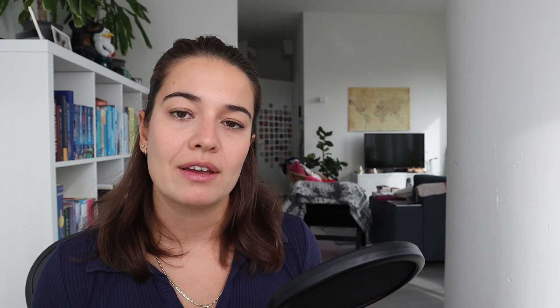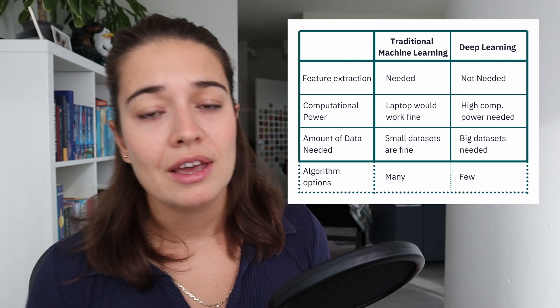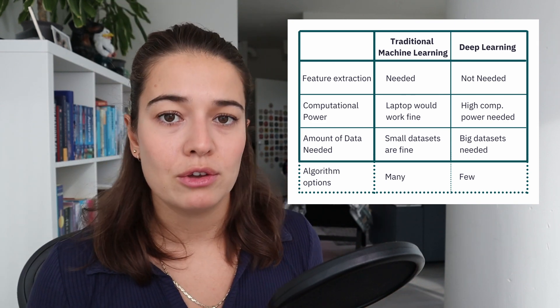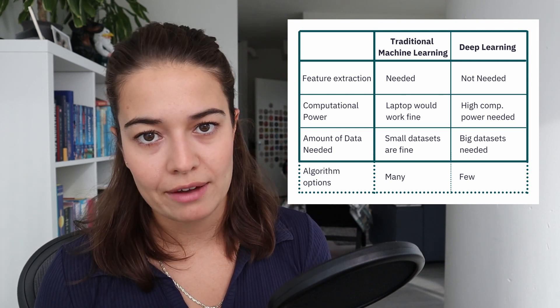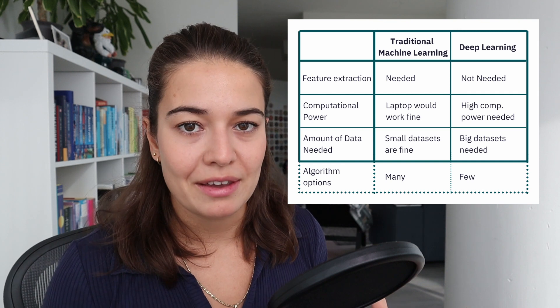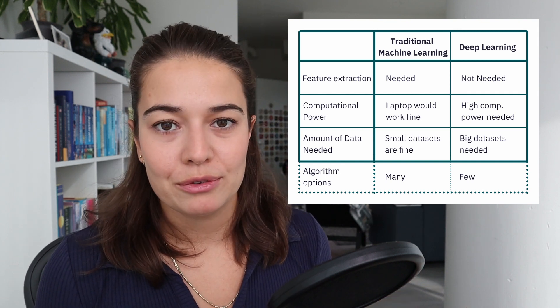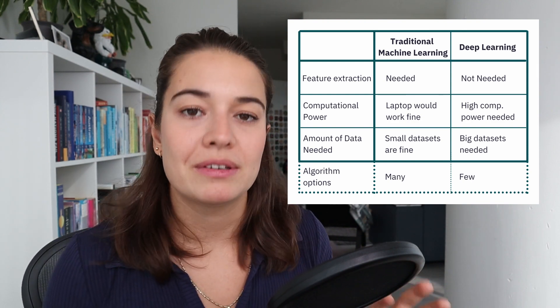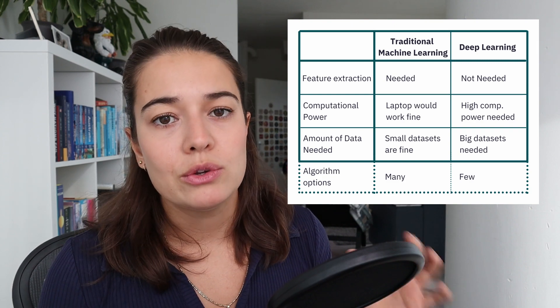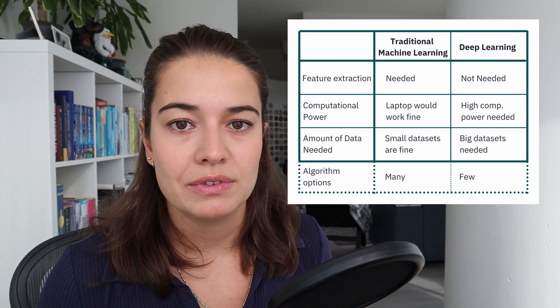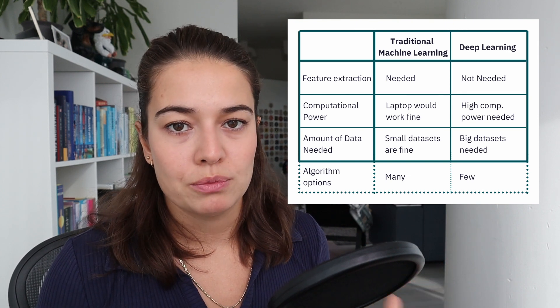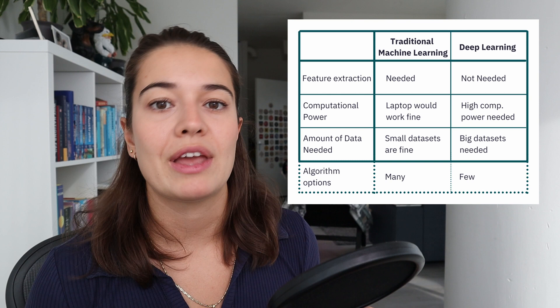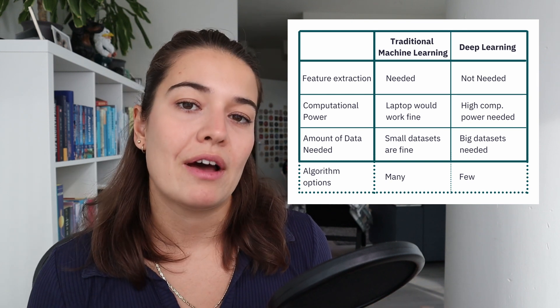To quickly wrap up: the difference between machine learning and deep learning is that with machine learning algorithms you have to extract features manually from the data, whereas with deep learning you don't. On the flip side, deep learning requires a lot of computational power and a lot of data, whereas traditional machine learning doesn't need tens of thousands of examples and can run on your laptop without any big problems.